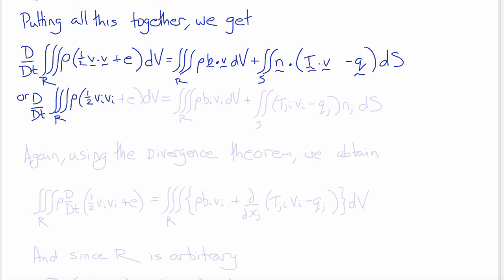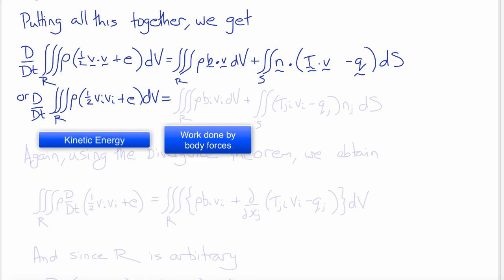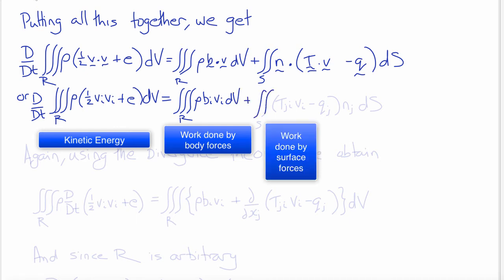In index notation, the material derivative of the volume integral of rho times (one-half V_i V_i plus E) dV equals the volume integral over R of rho B_i V_i dV, plus the surface integral over S of (T_{ji} V_i minus Q_j) times N_j dS.